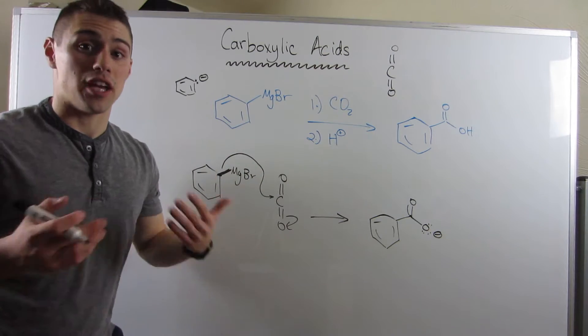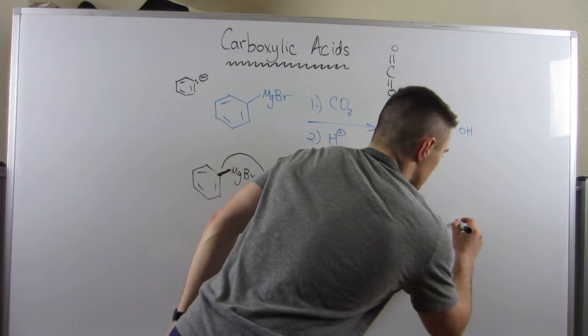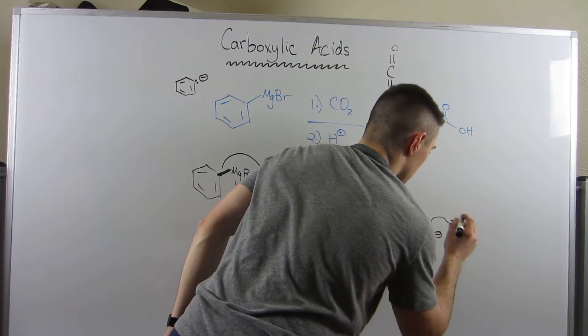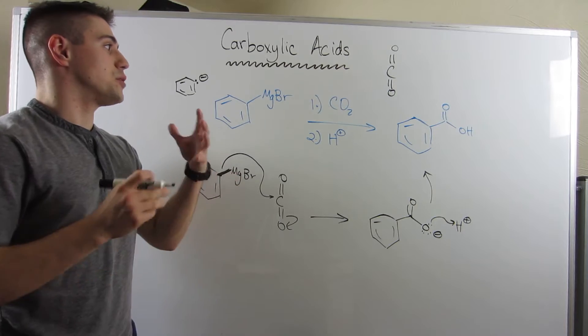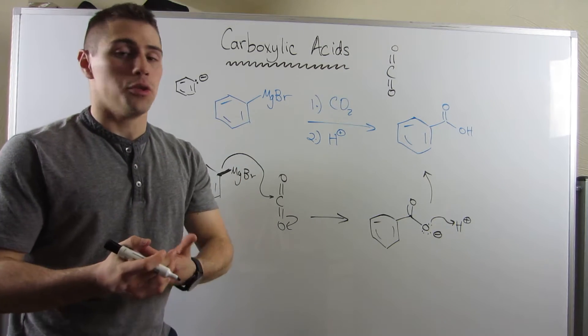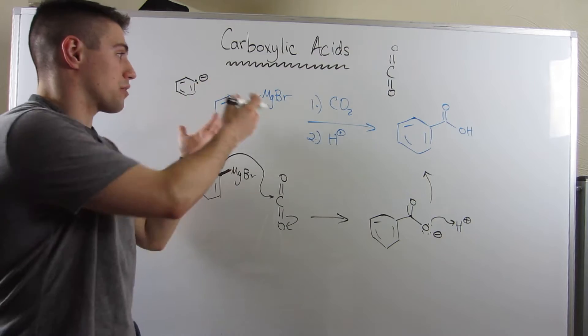This is where the second step of H+ comes in. Just a cleanup step. We'll throwback to OCHEM1. Now you know that if you need to make a carboxylic acid, you can just attack CO2 with a Grignard.